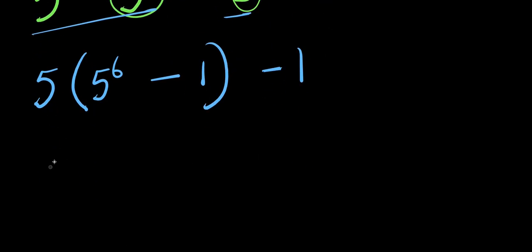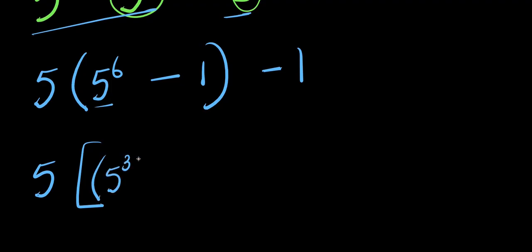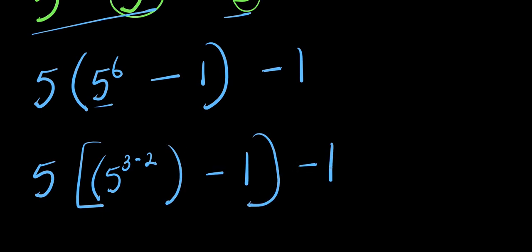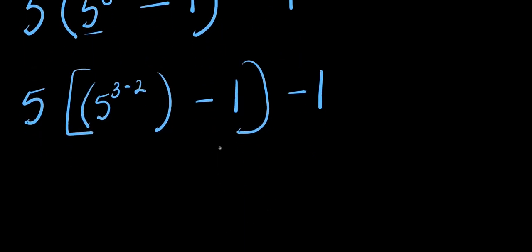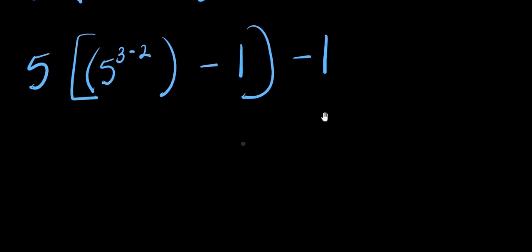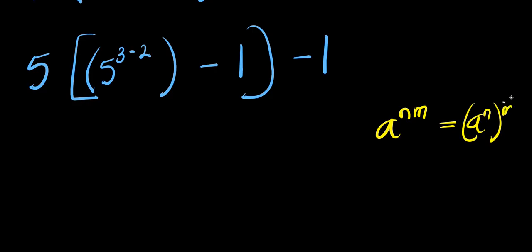From here I can have 5 times 5 power 6, and I can express 5 power 6 as 5 power 3 times 2, giving 6 minus 1 minus 1. Don't also forget: if you have a power n times m, this equals a power n to the power m.